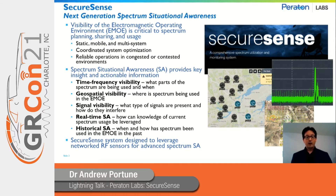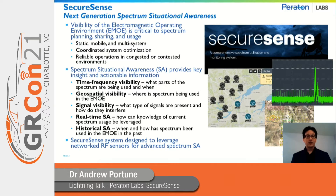The fourth area is real-time spectrum situational awareness, which considers knowledge of current spectrum usage and how that might be leveraged. And the last is historical spectrum situational awareness, which looks at how the spectrum has been used in the past. SecureSense was designed to provide answers to all five of these areas.